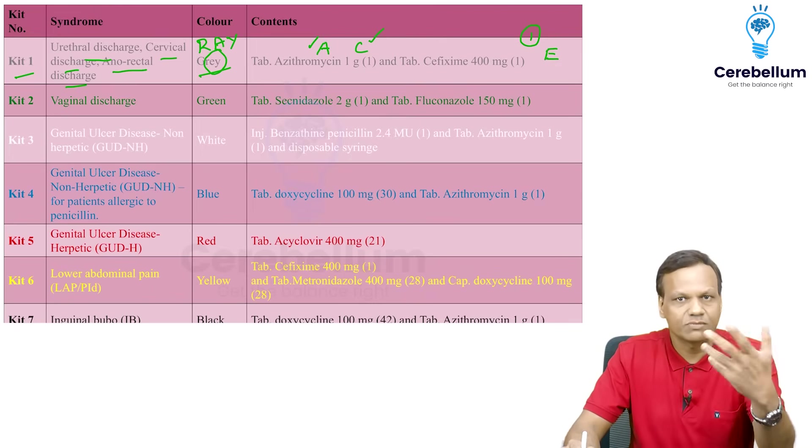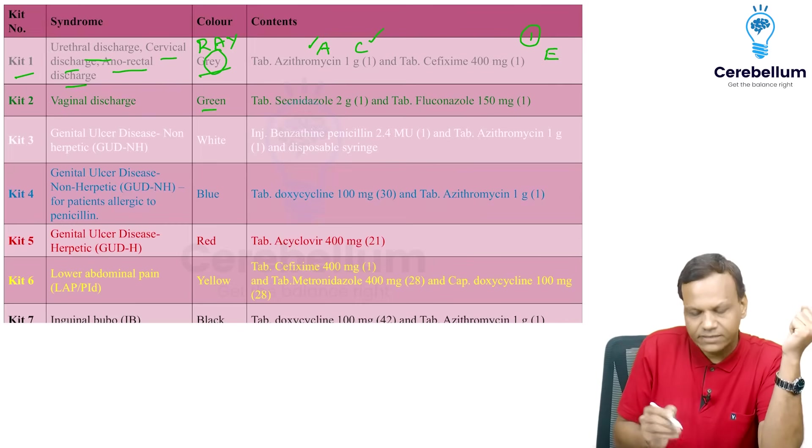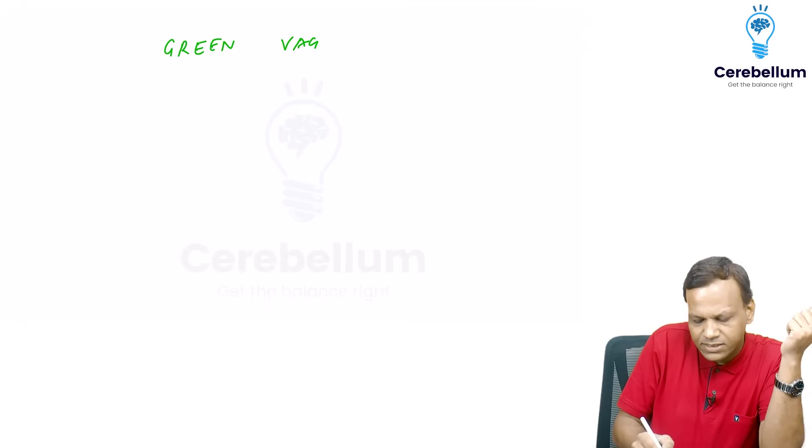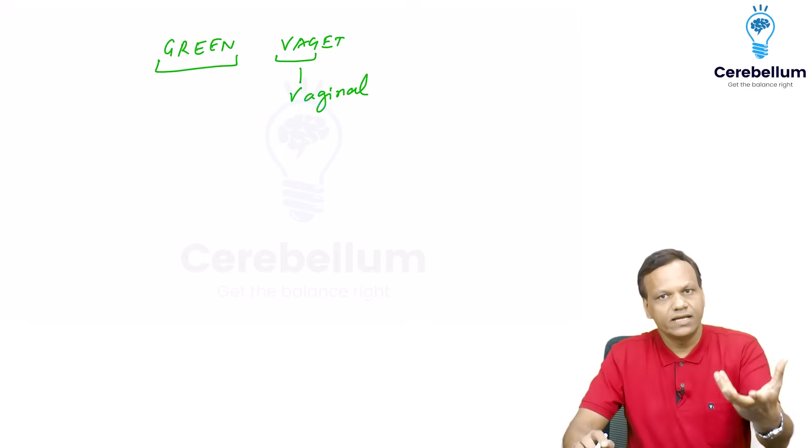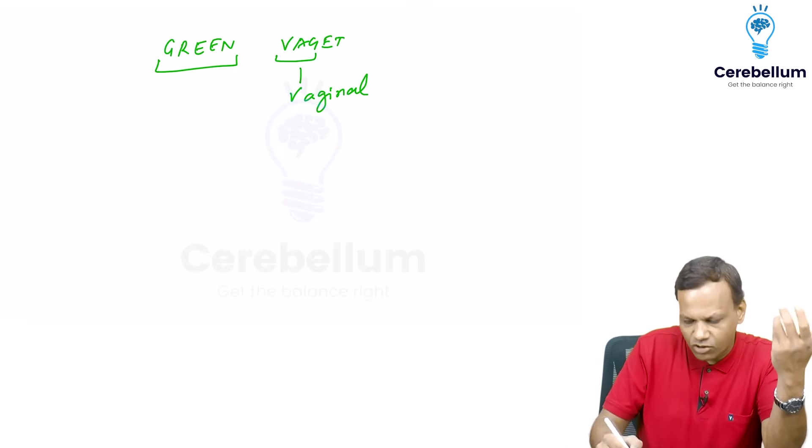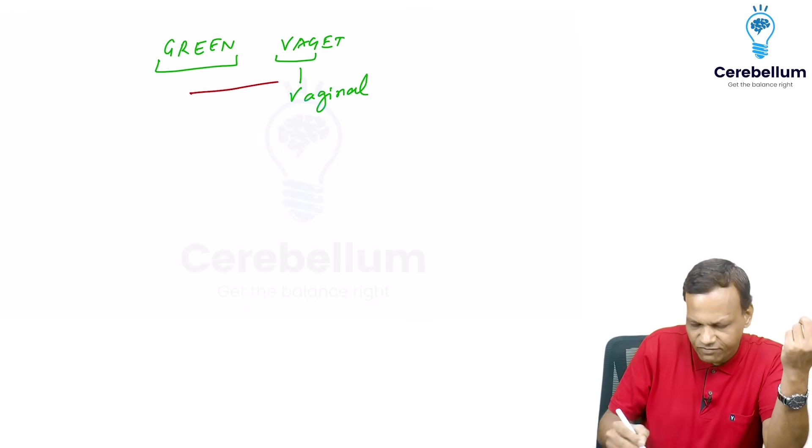So otherwise also, in the morning, first thing is sun's rays. So number one is ray, gray. Then second is green. So you can remember, we eat green vegetables. So green vegetables. So green says green vaginal discharge.